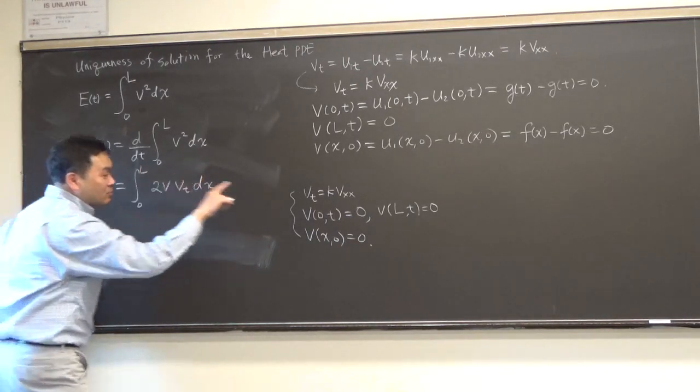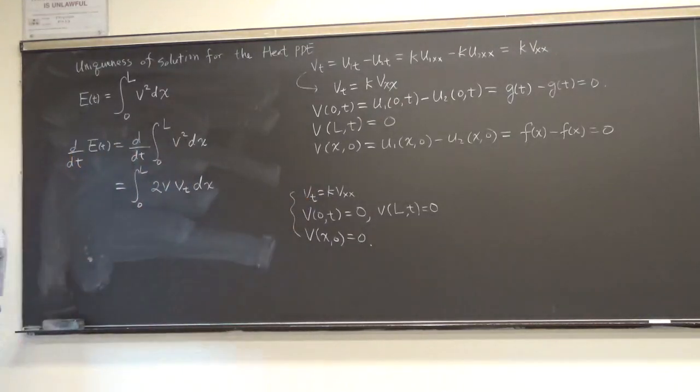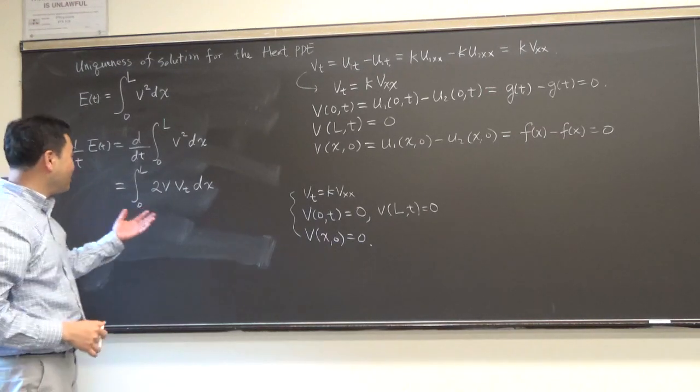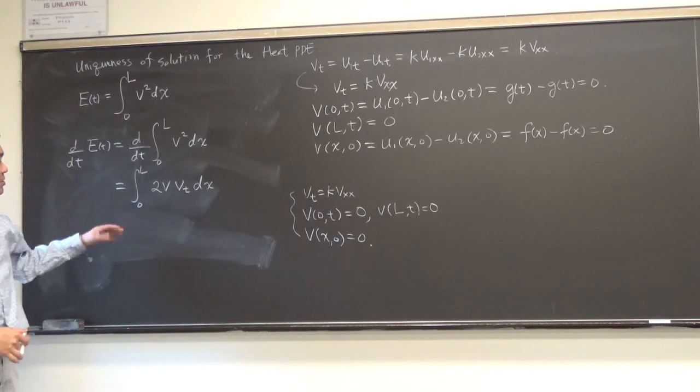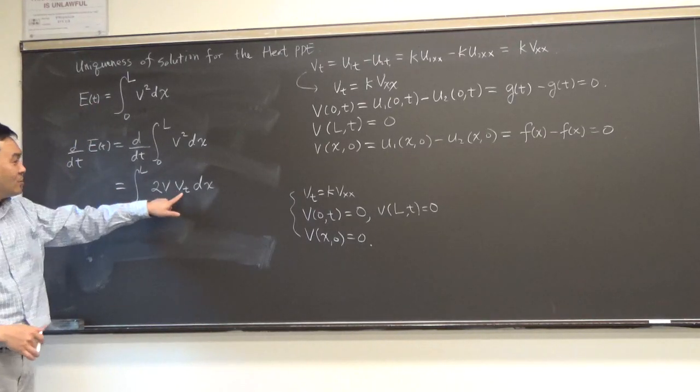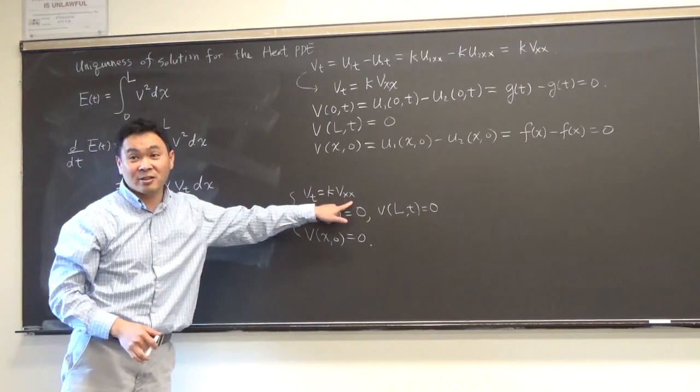And because this is an integration by x and it has nothing to do with t, I can bring this inside. And if you differentiate v squared by the chain rule, this is v squared differentiates to 2v, but then you pull the inside function out and differentiate which is v_t. That's what you get, right? Now, which one of these can we use over here? What do you think? It works like magic. I mean, once you define the correct thing, then everything just follows. See this, v_t is k times v_xx. So, I can replace this by 2 times v, k times v_t, v_xx, k times v_xx, dx.